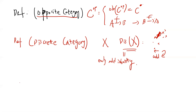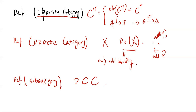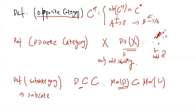A subcategory means you take a sub-object of C and for each A and B you take a subset of the morphisms Hom(A, B). If you take a sub-collection of objects and a subset of the original morphisms and they form a category, this is called a subcategory — similar to the idea of a subgroup or subring.